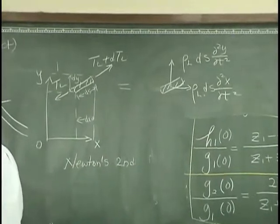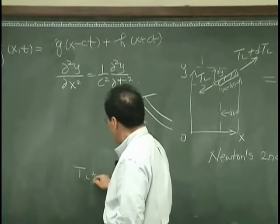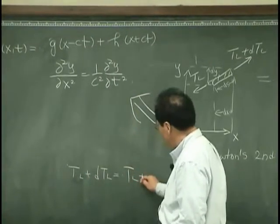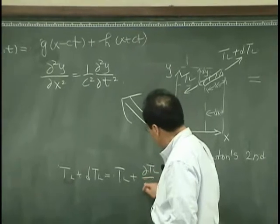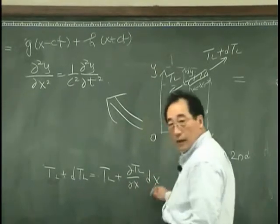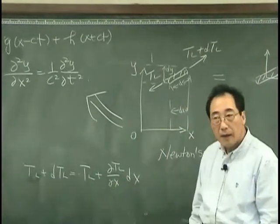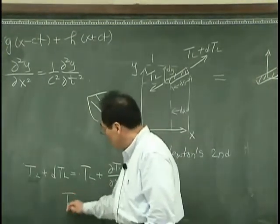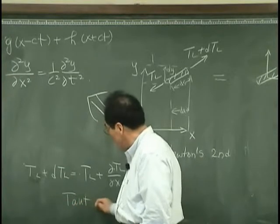Okay, note that Tl plus DTl using Taylor expansion can be expressed like, right? And I can assume that this is very small. In other words, the string is taut string.